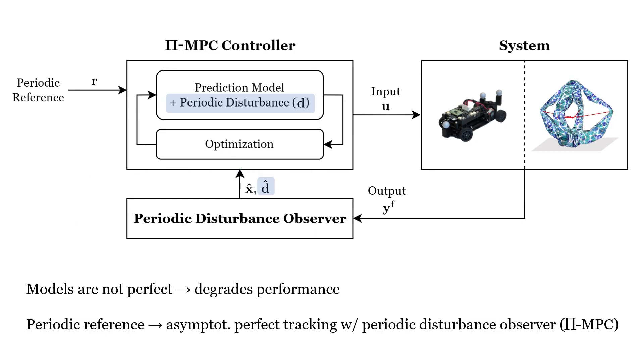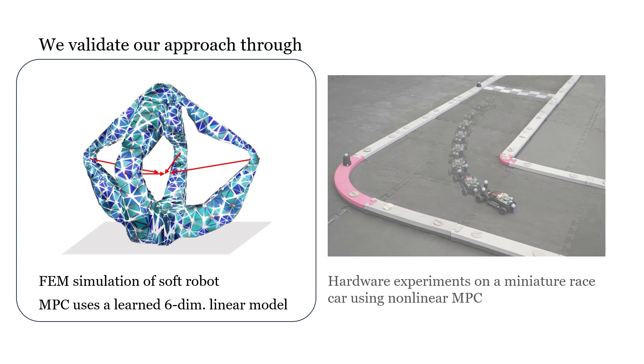Since many trajectories of interest are periodic, we show that it's still possible to achieve asymptotically perfect tracking by incorporating an observer that estimates and compensates for periodic disturbances.